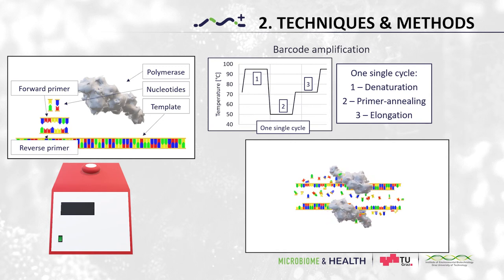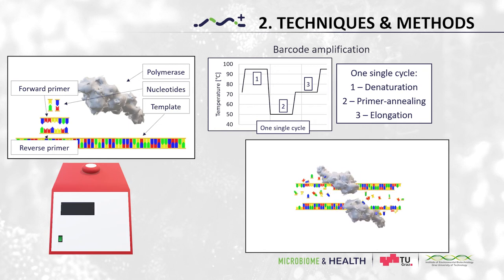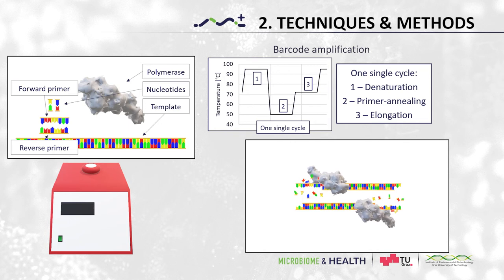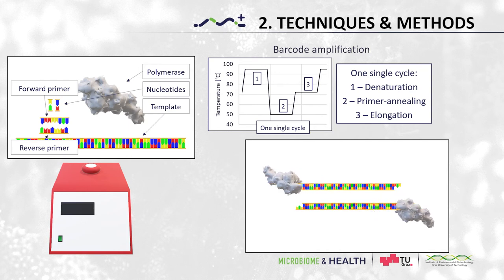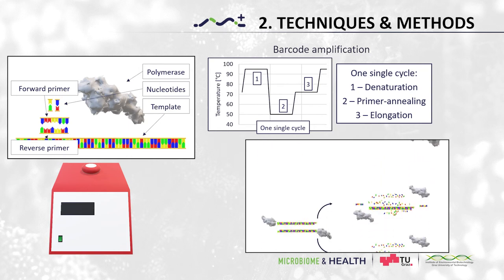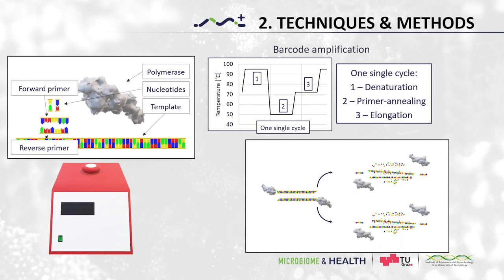At 72 degrees, the polymerase is doing its job, synthesizing a complementary strand of the DNA. This cycle repeats usually about 25 to 40 times, copying the region of interest again and again.